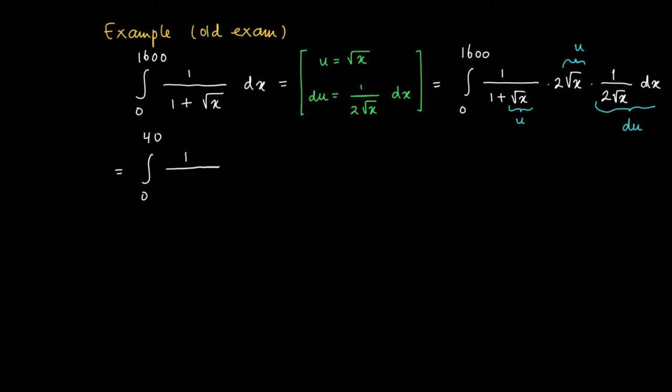So now we make the substitution. So we get 1 over 1 plus u times 2 times u du. So this is a way more simple integral.